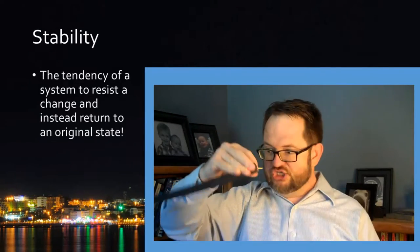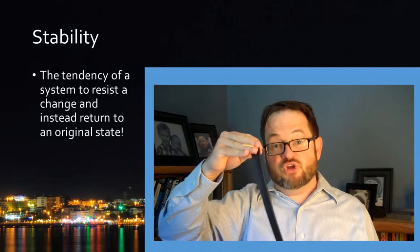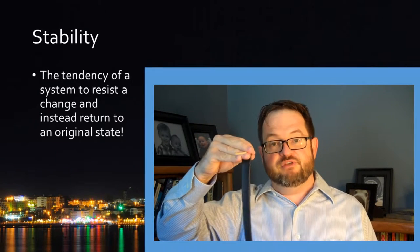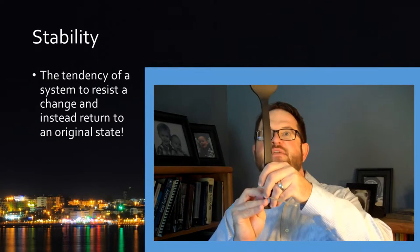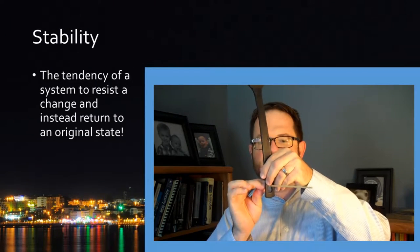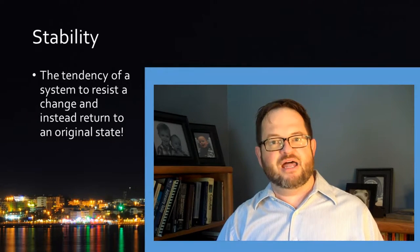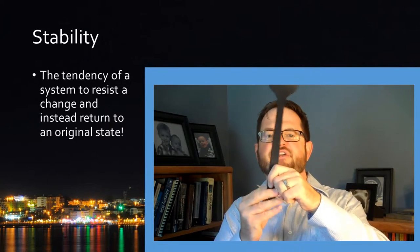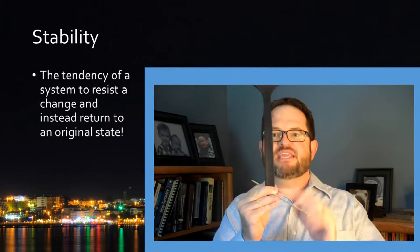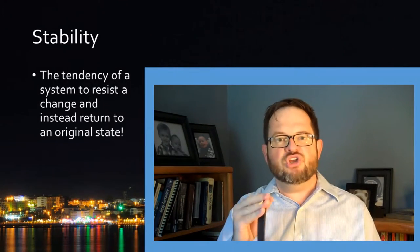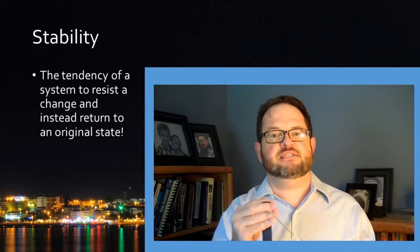Even fairly large nudges result in it still developing forces that return it to its original configuration. I could make other configurations — I can't quite get this thing to balance on the end of the stick, but with enough patience I probably could. But this would be a very unstable configuration of the spatula, because even a tiny nudge would send it to a radically different state, namely the opposite state.